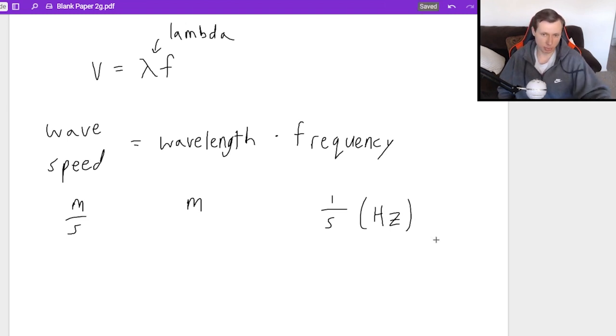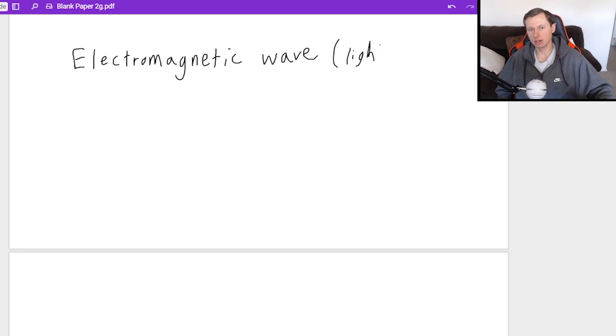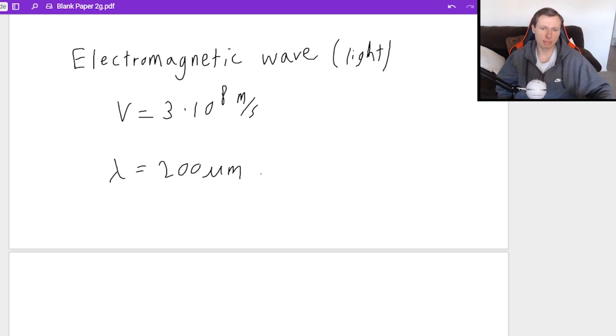So a classic example of this would be, for instance, an electromagnetic wave. Because as we all know, and if you didn't know this, then now you do, an electromagnetic wave is another word for just light, which means its velocity is always the speed of light, which is 3 times 10 to the 8th meters per second. And I can just make up a wavelength for us. I can say the wavelength, again, lambda is 200 micrometers. If you remember, micro means that it's really 200 times 10 to the minus 6th meters.